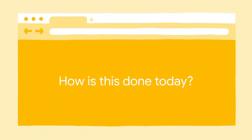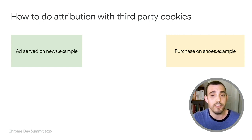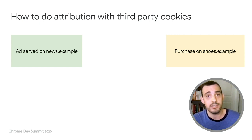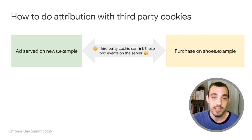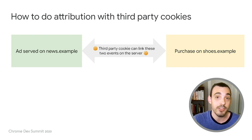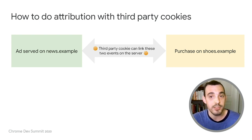Before diving into the technical details of the API, it's useful to recap how this is done today using third-party cookies. Conversion attribution at its core involves connecting two events: an ad being served to a person, and a future event when that person later converts or buys something. With cookies, this is easy. As long as the same party observes the ad served and the conversion, they can use a cookie with a unique ID to link the two events together on their server. In this example, the ad tech company can use the cookie to see that the very same person that saw the ad on the news site later purchased the shoes on the shoe merchant's site.